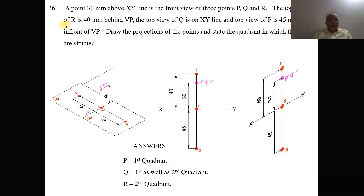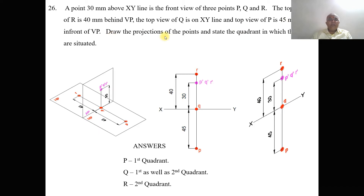The top view of R is 40 mm behind VP. Where do you get behind VP? Behind VP will come in the second quadrant. So 40 mm behind VP — when you look from the top view, we can see the distance behind VP; it will be on HP. The top view of Q is on the XY line. The top view of P is 45 mm in front of VP — when you look from the top view, it will be on HP. So it is in the first quadrant.